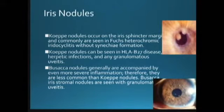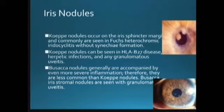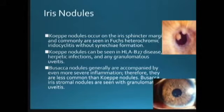These findings will not guide you exactly to the diagnosis itself, but combined with other findings, they will be helpful for you to reach a diagnosis. It doesn't mean that mutton fat KPs equal TB, or that nodules equal sarcoidosis. There is usually an overlap, and some entities can present with granulomatous or non-granulomatous features — vice versa.